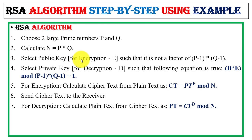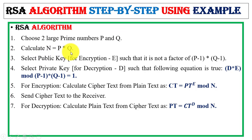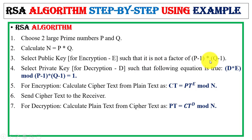Now here is the RSA algorithm. Step 1: choose two large prime numbers p and q. Step 2: calculate n, which equals p times q. Step 3: select a public key e for encryption — choose e such that it is not a factor of (p-1)(q-1). Step 4: select a private key d for decryption such that the following equation is satisfied.